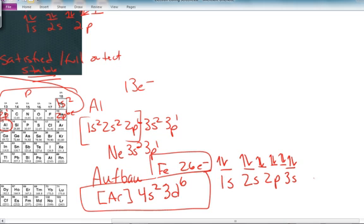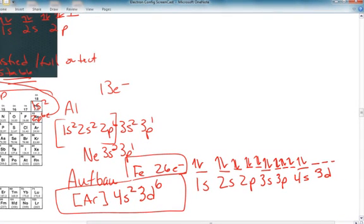Then it goes 3p6, like that, and then 4s2, and then 3d, 1, 2, 3, 4, 5, 6. Oops, you see them there, 1, 2, 3, 4, 5. I kind of moved over on my things a little bit, but you get the point.